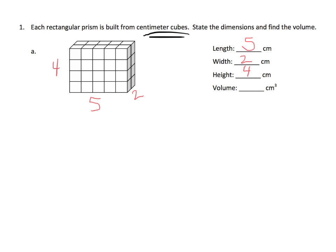What we're going to do is count all of the cubes on the top floor — I think of this as a building. Up here is our first floor, or top floor. Let's count how many cubes are in that top floor: 1, 2, 3, 4, 5, 6, 7, 8, 9, 10. So we've got 10 cubes in that top floor, and this 4 tells us that we've got 4 floors — 10, 10, 10, and 10. So our volume is 40.